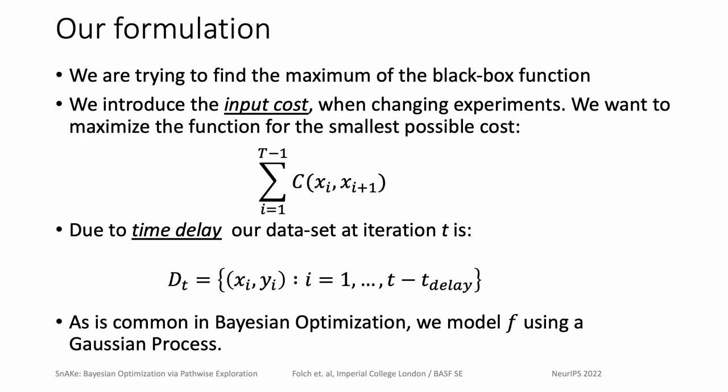We will be focusing on another formulation. We are still trying to maximize a black box function. However, we introduce an associated cost when changing an experiment from input x_i to input x_{i+1}. We want to maximize the function for the smallest possible cumulative cost. Furthermore, we assume there is a time delay between starting an experiment and receiving an observation. So the data set at time t is given by all experiments up to iteration t minus t_delay.